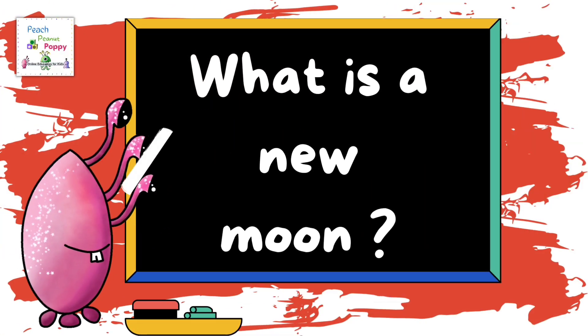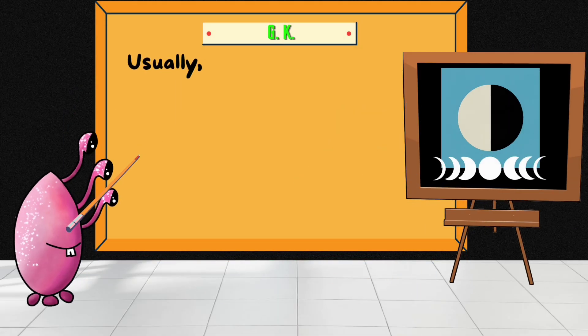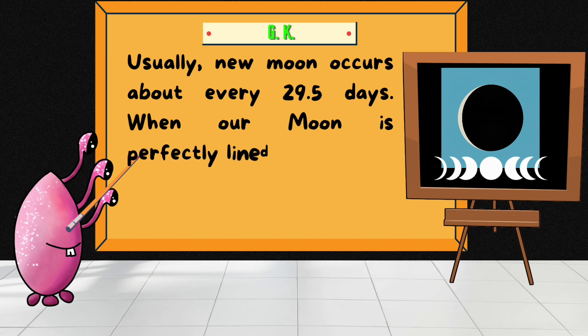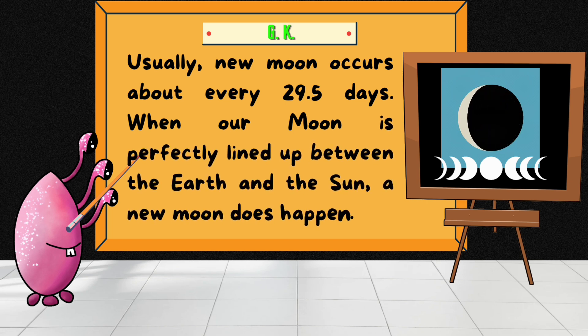What exactly is a new moon? Usually, new moon occurs about every 29.5 days. When our moon is perfectly lined up between the Earth and the Sun, a new moon does happen.